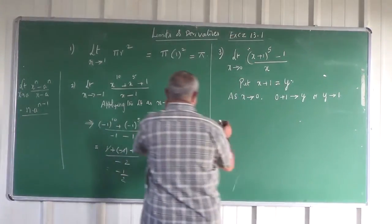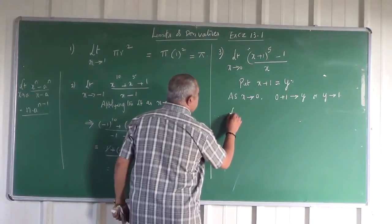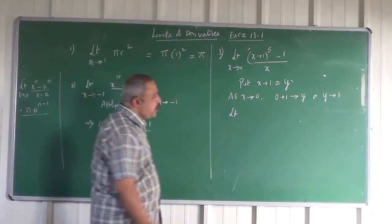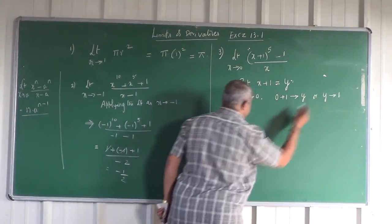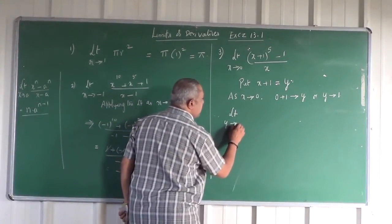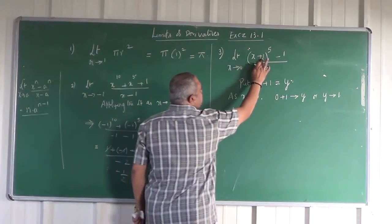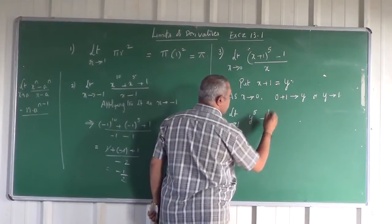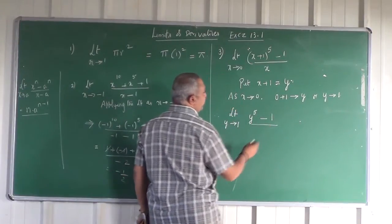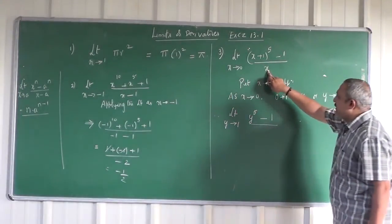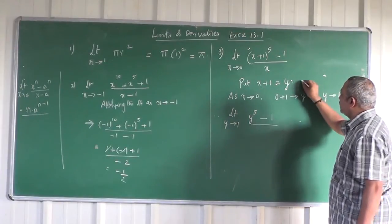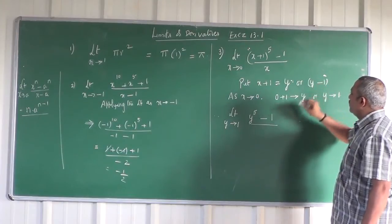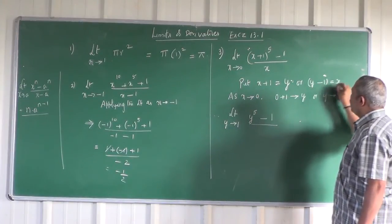Therefore, instead of writing x tends to 0, I write the new limit y tends to 1. For x + 1, I have to write y. So y^5 - 1 divided by... now x is there. What is x? y - 1. If x + 1 = y, then x = y - 1.